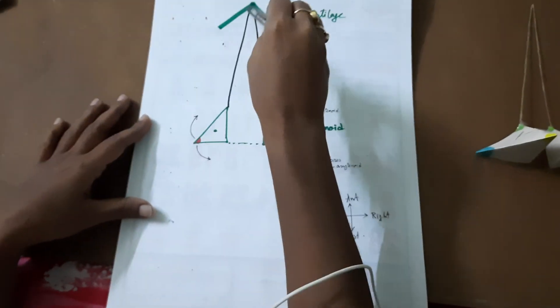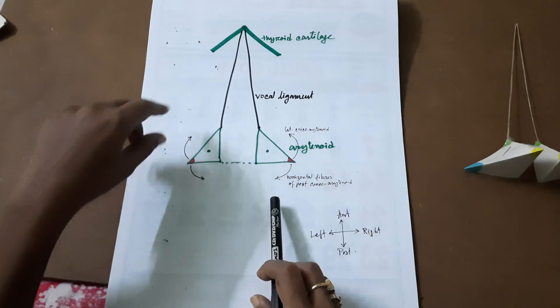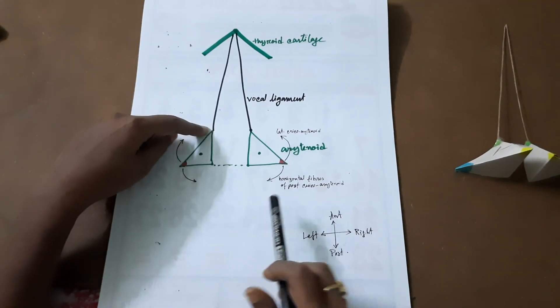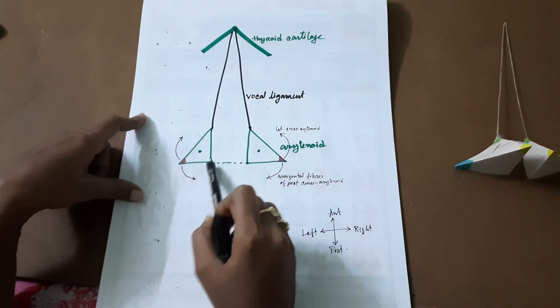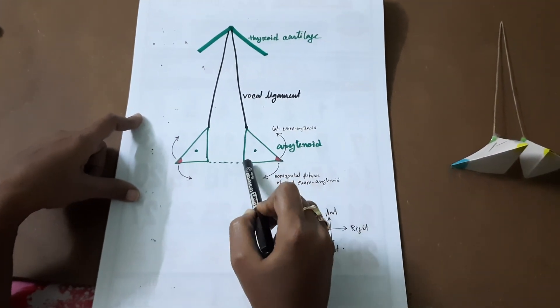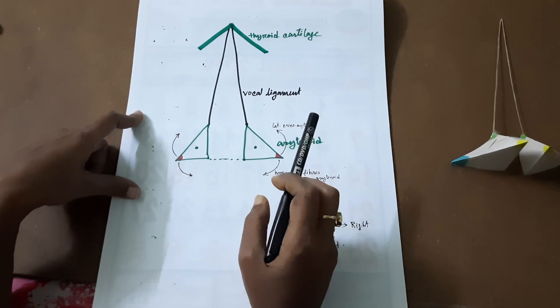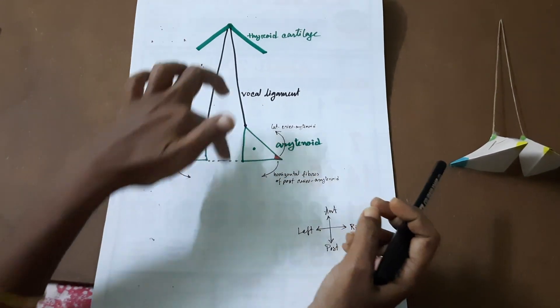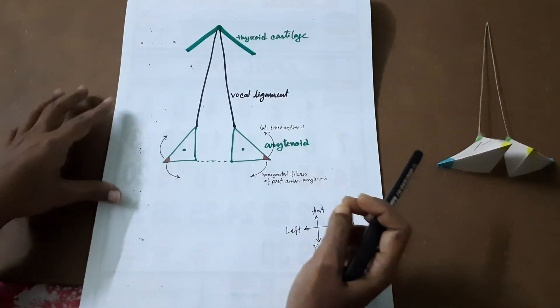On each side it is bounded anteriorly by the vocal ligament, drawn in black, and posteriorly by the arytenoid cartilage, mainly the vocal process. So this is the Rima Glottidis.